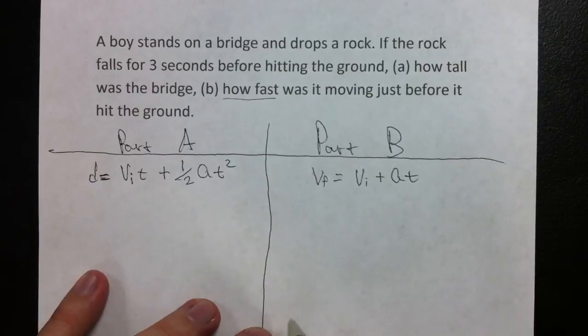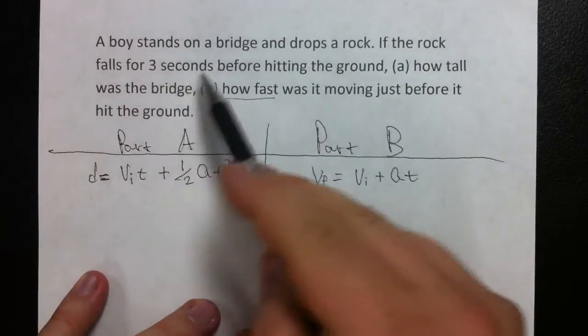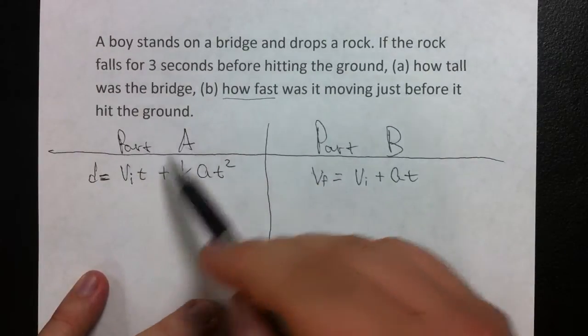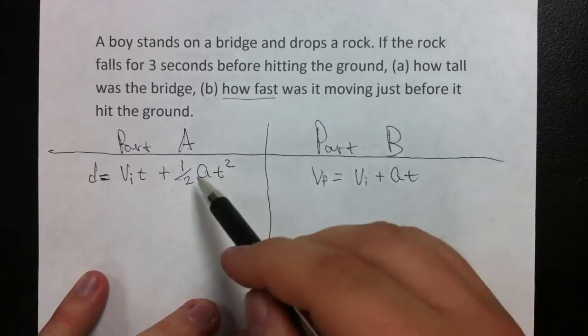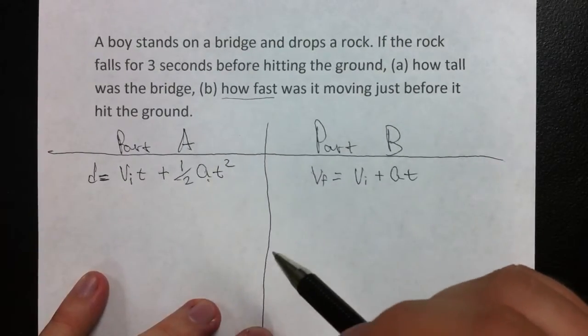In order to find how tall the bridge was, since we know the time, and we know our initial velocity, and we know our acceleration in this case, we can just input into this formula and find our answer.